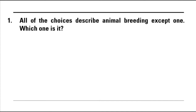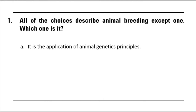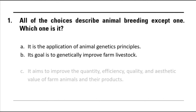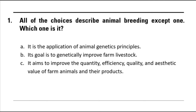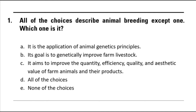Question number 1: All of the choices describe animal breeding except one. Which one is it? Letter A: it is the application of animal genetics principles. B: its goal is to genetically improve farm livestock. C: it aims to improve the quantity, efficiency, quality and aesthetic value of farm animals and their products. D: all of the choices. And letter E: none of the choices.